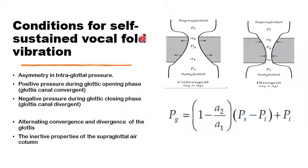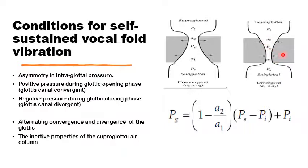The condition to have self-sustained vocal fold vibration is to have asymmetry in the intraglottal canal pressure — the pressure in the intraglottal canal. If there is asymmetry providing positive pressure in the opening phase, that would help getting the two vocal folds apart, and negative pressure during the closing phase that would pull the medial ends together to close the glottis. This is the condition for self-sustained vocal fold vibrations.